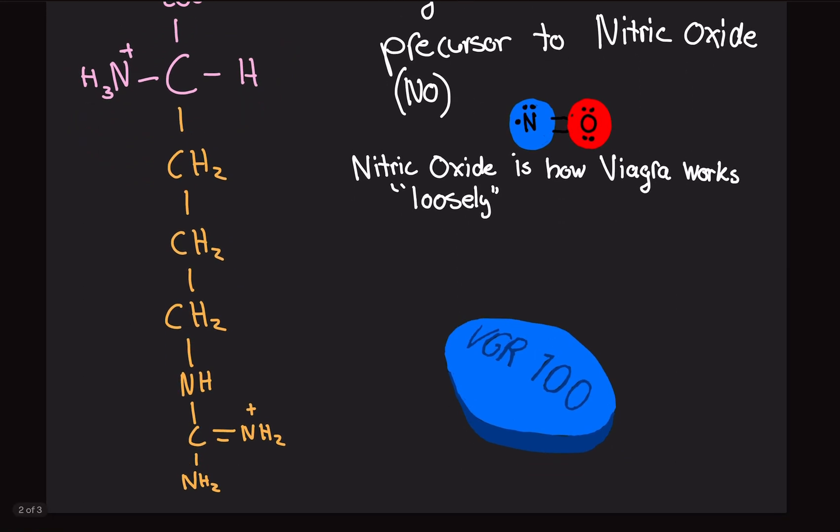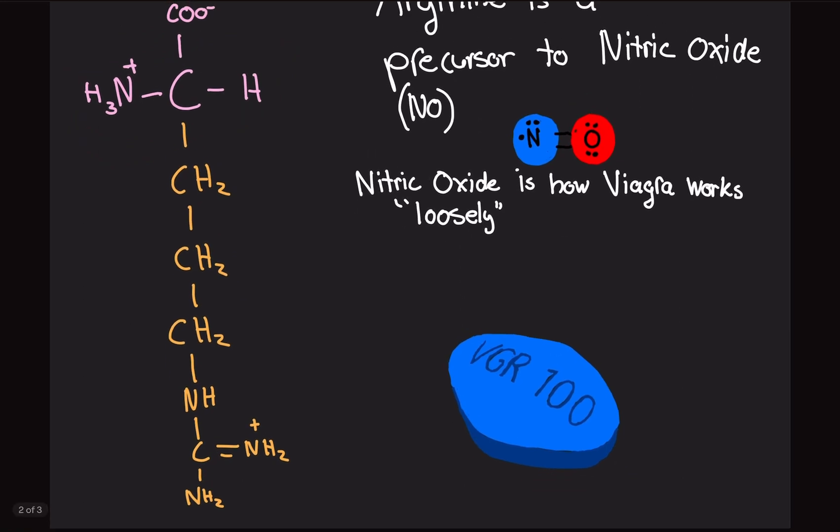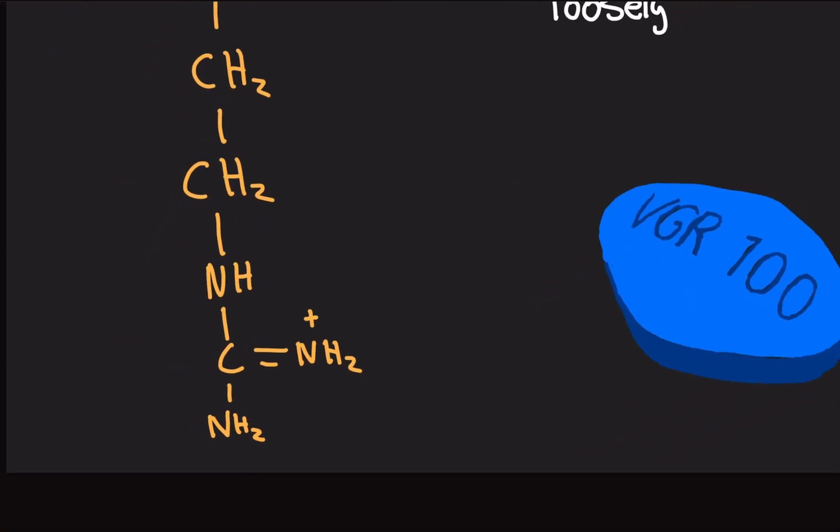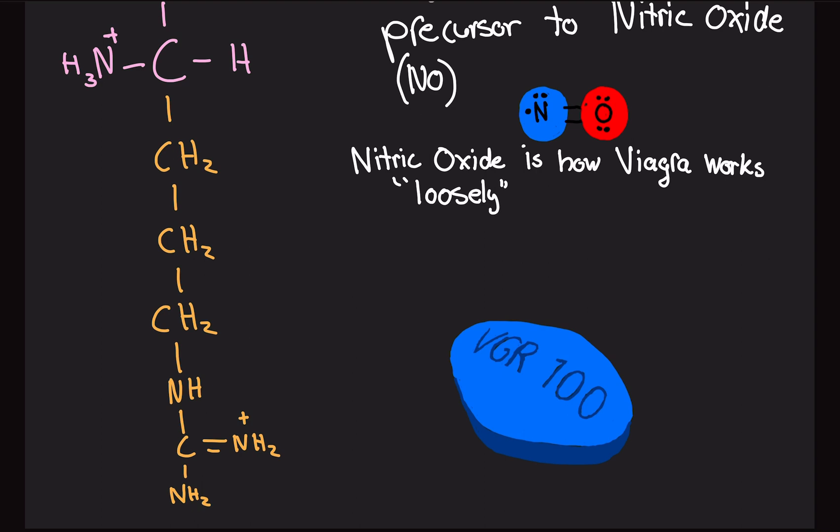11. Arginine, abbreviated as an R. We got our usual stuff, and we got our R group. The R group is literally the same CH2 chains but a little bit different. We got one CH2, two CH2s, three CH2s.